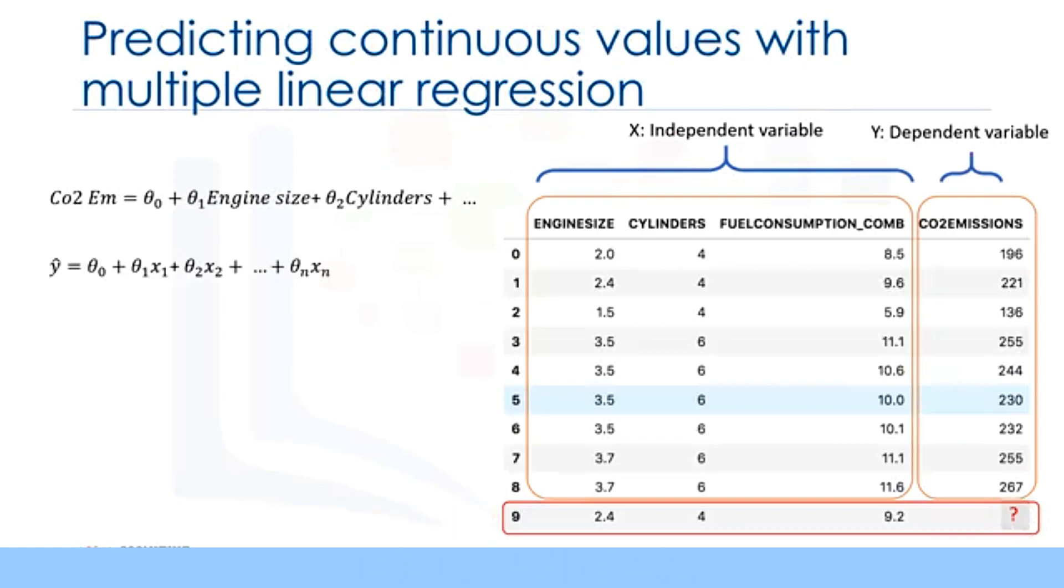Generally, the model is of the form y hat equals theta 0 plus theta 1 x1 plus theta 2 x2 and so on up to theta n xn. Mathematically, we can show it as a vector form as well. This means it can be shown as a dot product of two vectors: the parameters vector and the feature set vector.